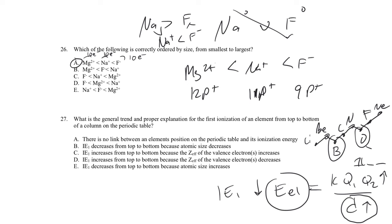IE1 decreases from top to bottom because atomic size is increasing. There are a few instances where ionization energy increases top to bottom due to effective charge winning out. The size trend and effective charge trend don't have the same inconsistency seen in ionization energy with S vs. P subshells or spin-paired electrons. If you see ionization energy increasing down a group, that's explained by the effective charge increase outweighing the size increase.